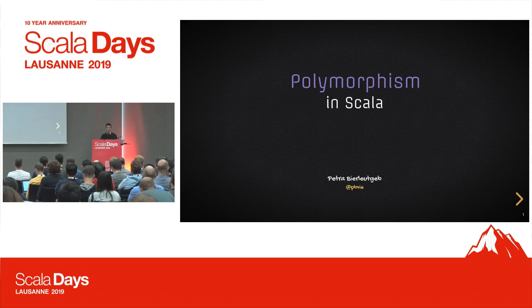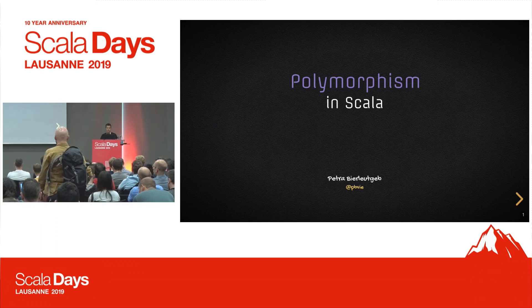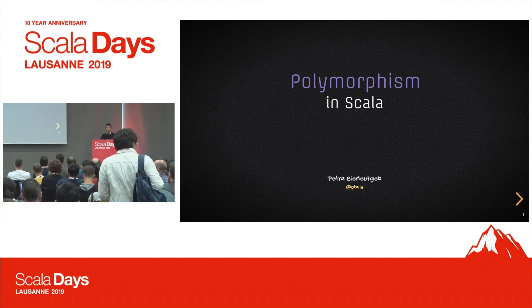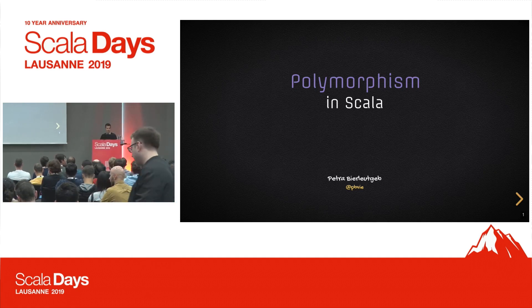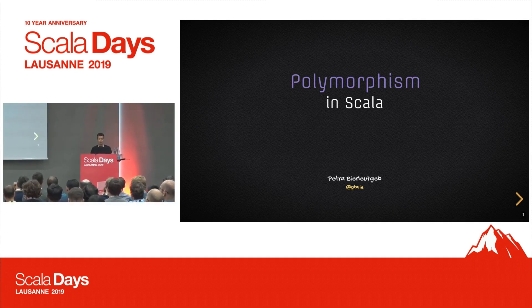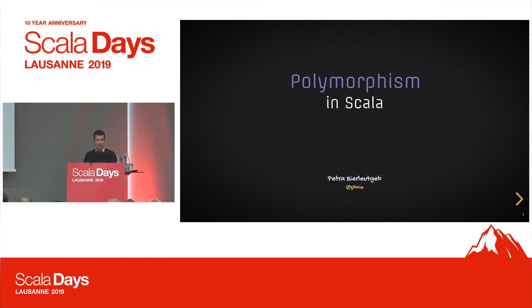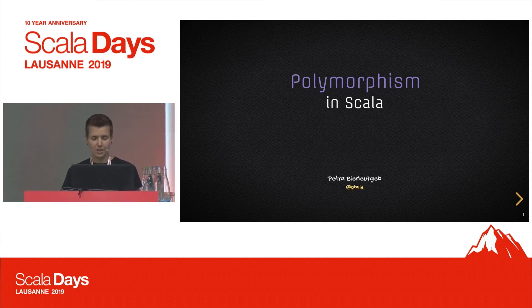What attracted me first to Scala was the mix of functional programming and object-oriented programming. So 10 years ago I came from a Java background. And what most people associate with polymorphism is object-oriented programming. But in fact, polymorphism itself is not really bound to one type of programming. In this talk, I'm going to show you the main different types of polymorphism and how they are written in Scala.